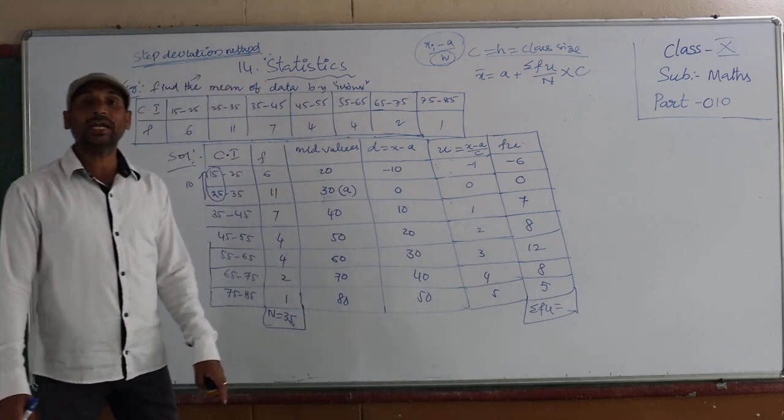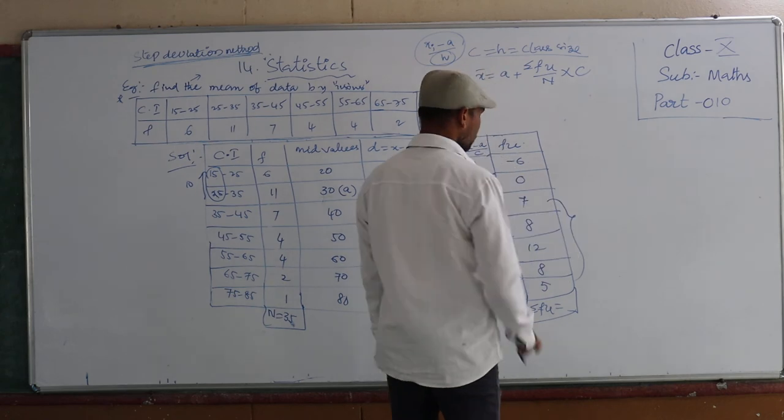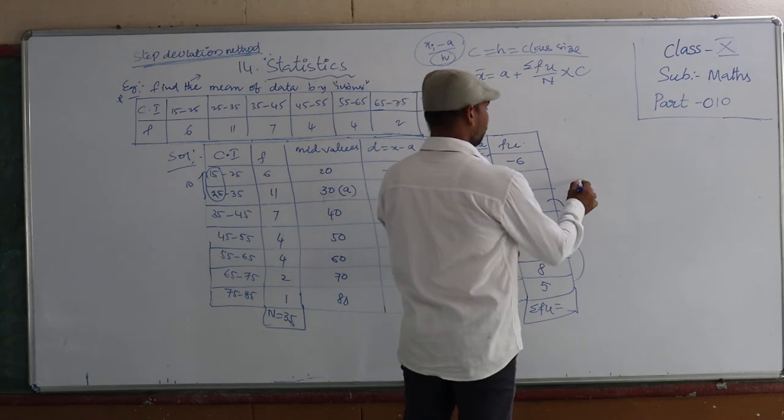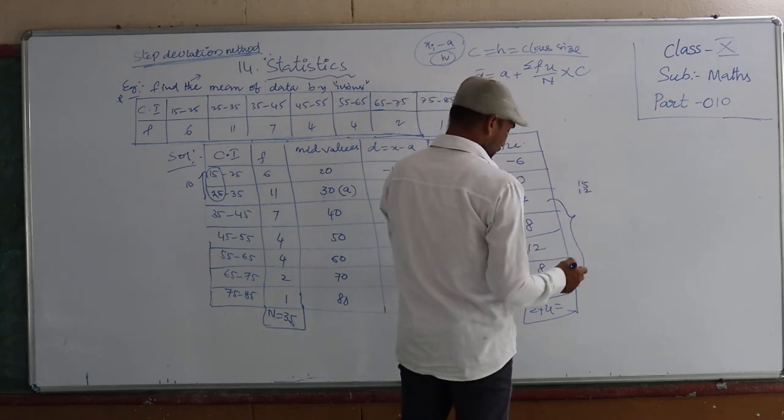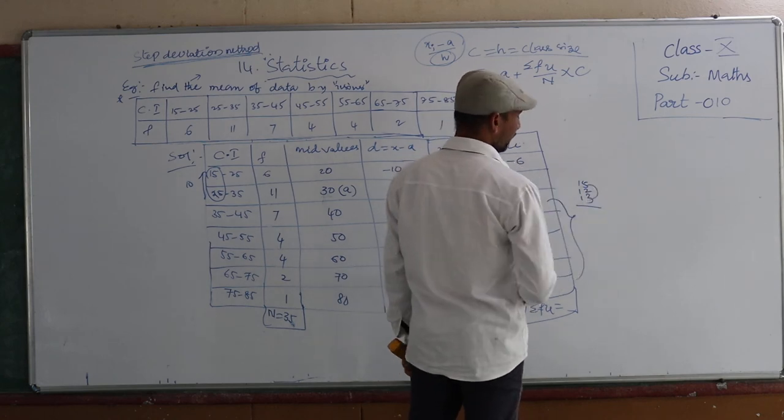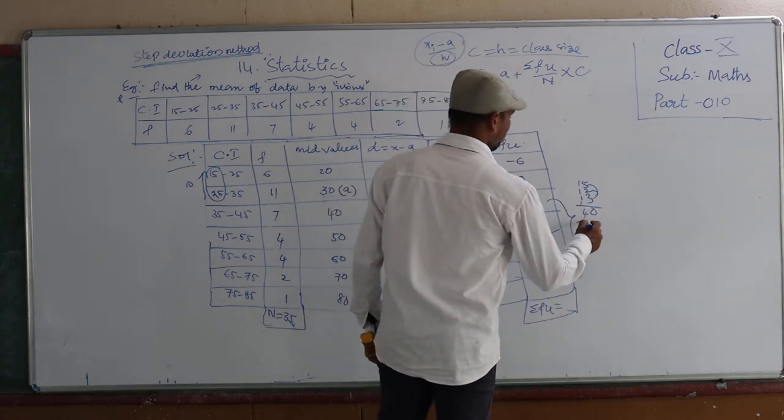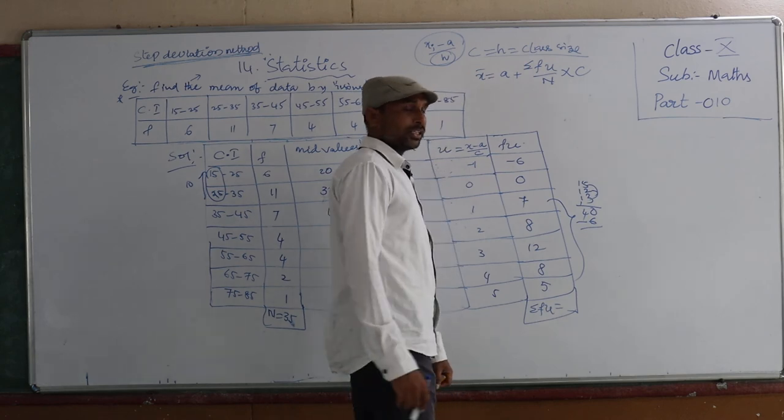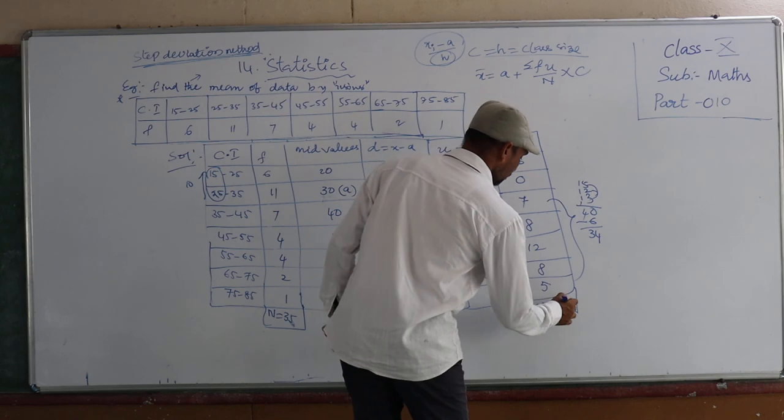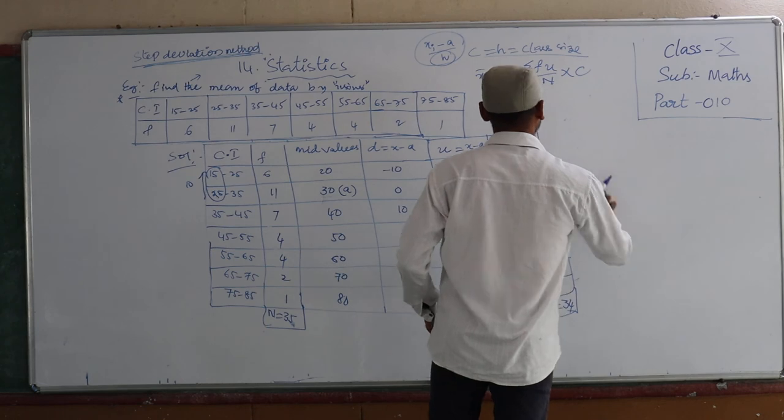Then find out ΣfU. First add all positive values, then subtract negative values. How much? 7 plus 8 is 15, 15 plus 12 is 27, then 8 plus 5 is 13, total is 40. Then 40 minus 6 equals 34. So here we are getting 34. This 34 we are taking in the formula.